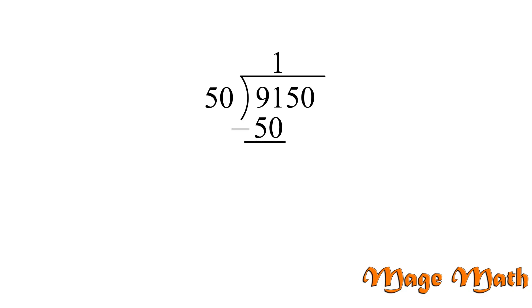Next, draw a line and subtract. 91 minus 50 equals 41. Our next step is to bring down the 5, and then we start all over again. How many times does 50 go into 415 without going over? Well, I know 50 times 10 is 500, which is more than 415. Plus, we can't put a double digit number up top. So we need a number less than 10. How about 8? 50 times 8 is 400. That will work.